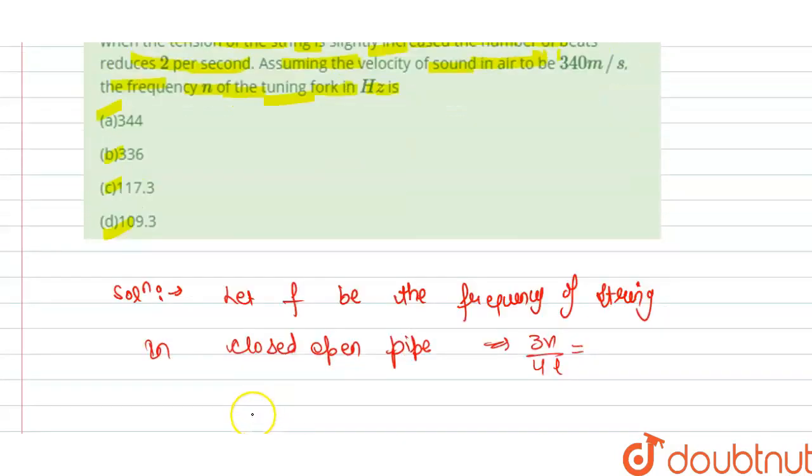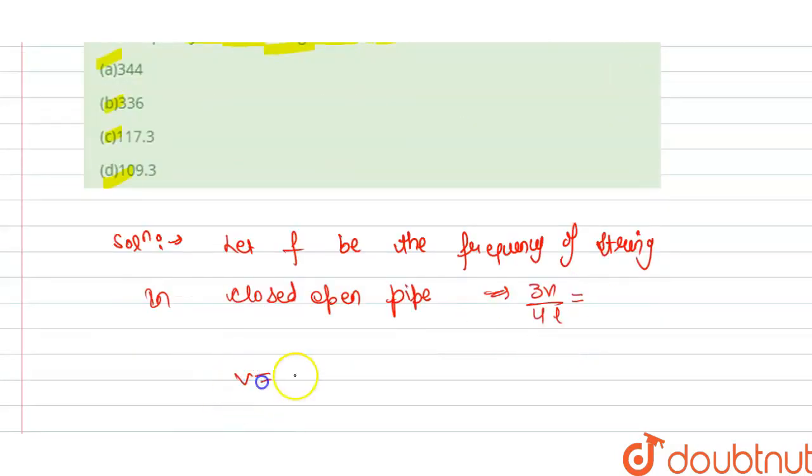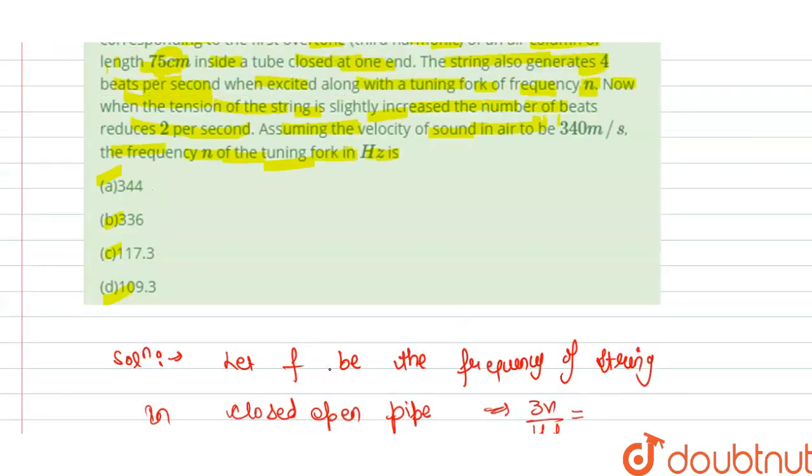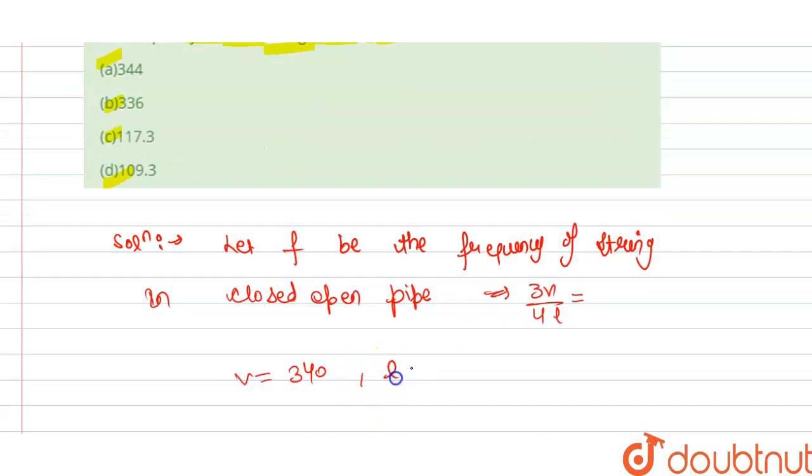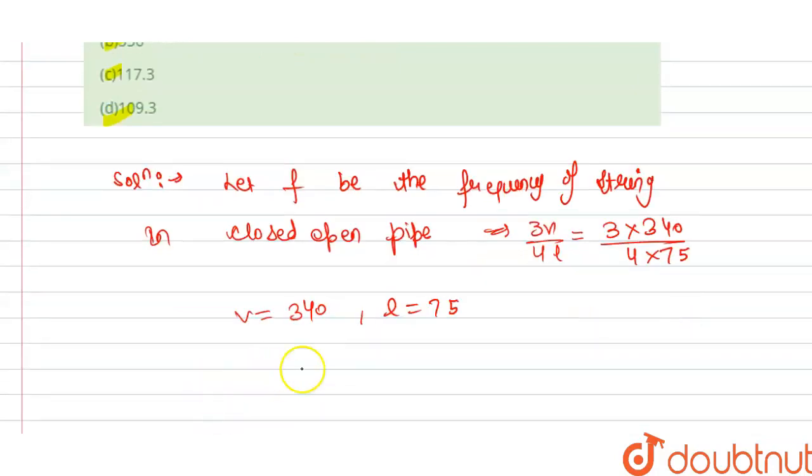Velocity of sound is 340, so v is 340, and l is 75. If we put the values here, we get 3 × 340 divided by 4 × 75.